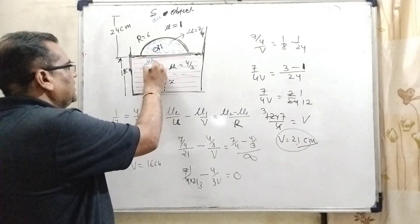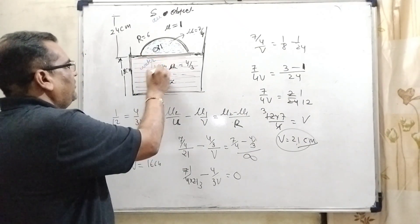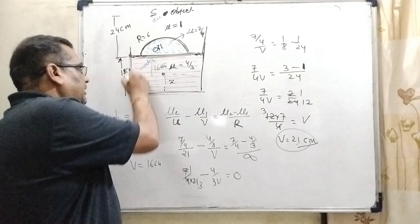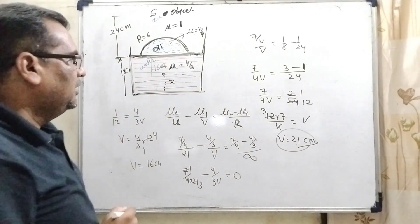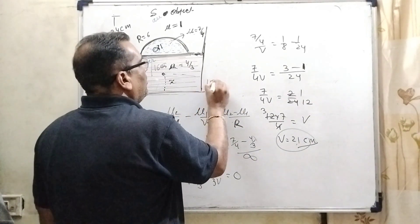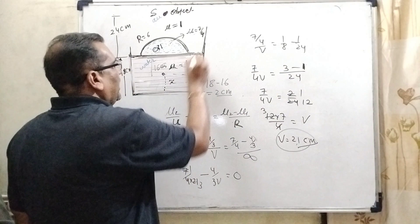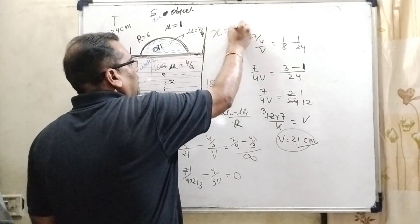So here that is the 16 centimeter image is formed, final image is formed. And total length or total height of this water level, that is 18. So 18 minus 16, that is 2 centimeter. So our answer X equal to 2 centimeter.